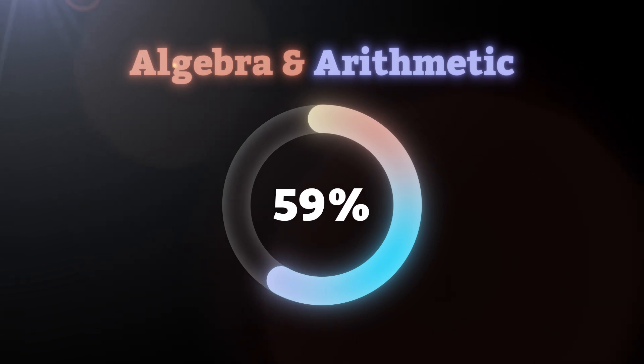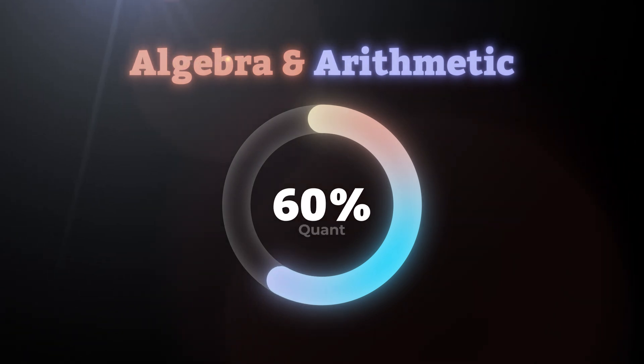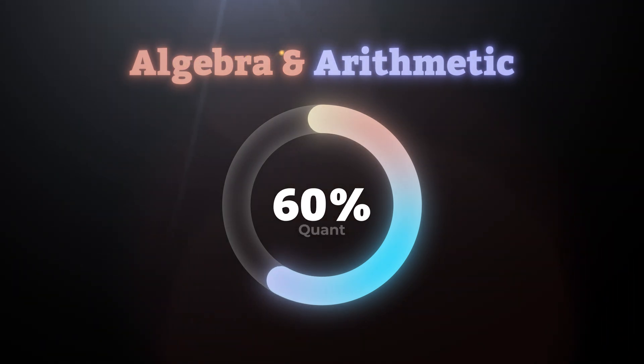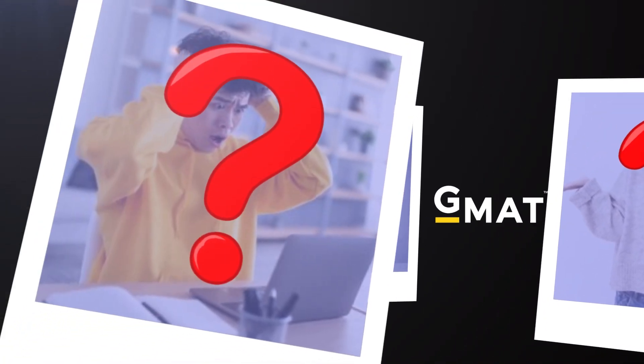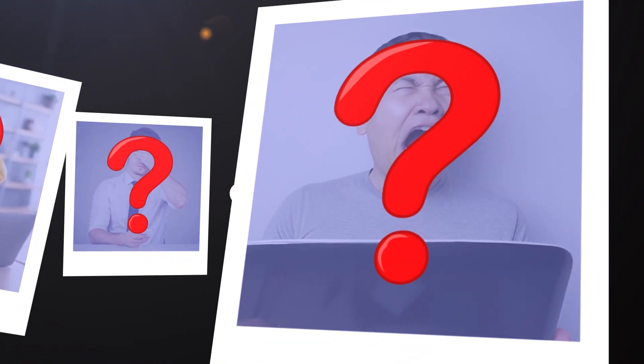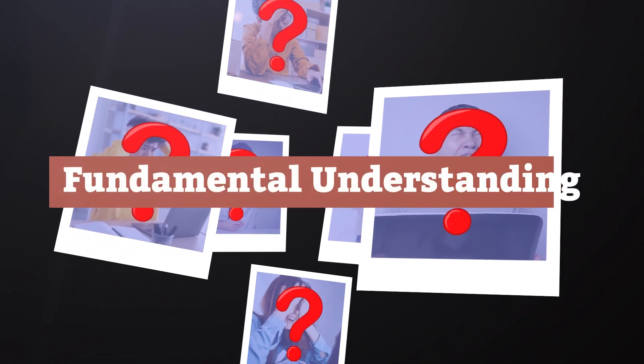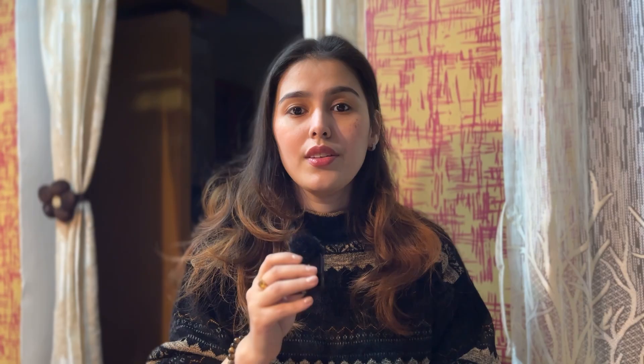Algebra and arithmetic consist of 60% of the quant section, which means you cannot ignore these topics. GMAT frames its questions in such a way that you could make silly mistakes and not even realize it if you don't have fundamental understanding of these subjects. So here we are discussing the most common mistakes that people make. Watch the video till the end so you don't fall prey to them.